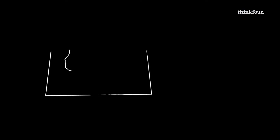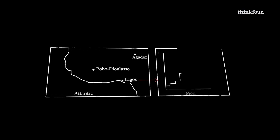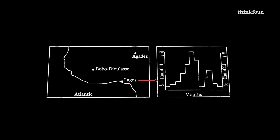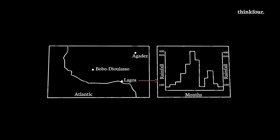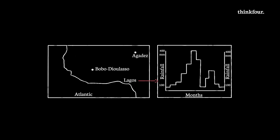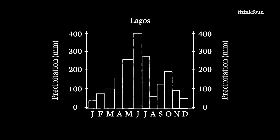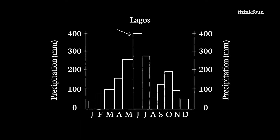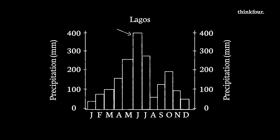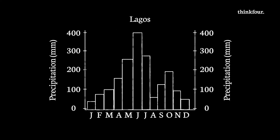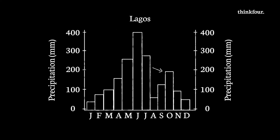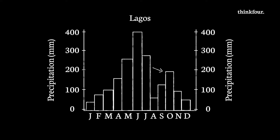Cities like Lagos on the coast of Nigeria are closer to the tropics. Lagos is wetter as it is affected by the tropical maritime air mass throughout the year. Climate graphs for Lagos will show rainfall all year, with a peak in June as the ITCZ moves north, and then it peaks again in October as the ITCZ retreats south, bringing more rain to the area.